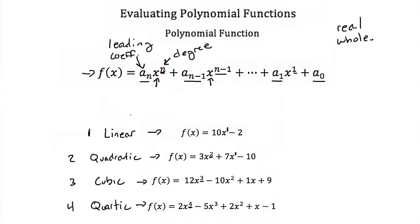And then lastly, if we write our polynomial function so that our exponents decrease in order — so look at our quartic function: we have x to the fourth, then x to the third, x to the second, then x to the first, so they're constantly decreasing — if we write our polynomial function in that form, we say that it's in standard form.